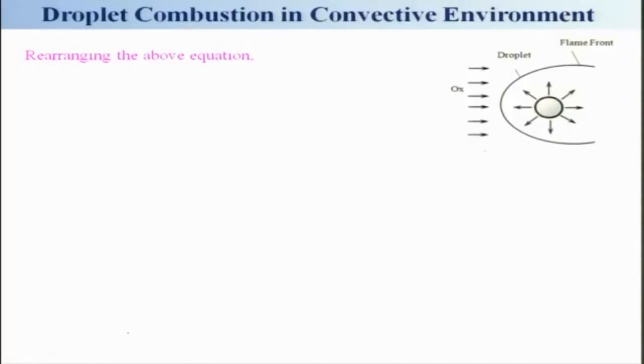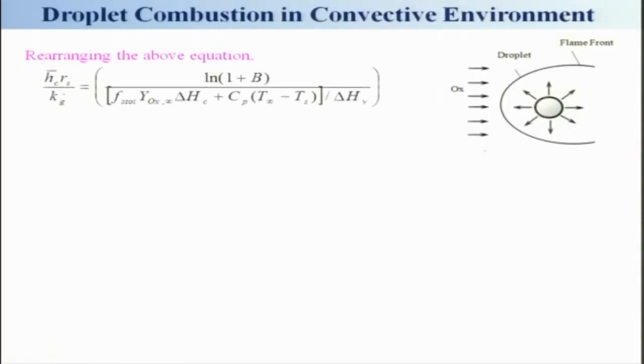Let us recall what we learnt in the last lecture. We were basically looking at how to handle the mass burning rate of a droplet under a convective environment, and we looked at a heat balance of the surface, trying to look at it — it is a very ad hoc solution. So, rearranging the earlier equation, we can get basically S_c * r_s / k_g and this is ln(1 + B), and these terms we had already discussed last time.